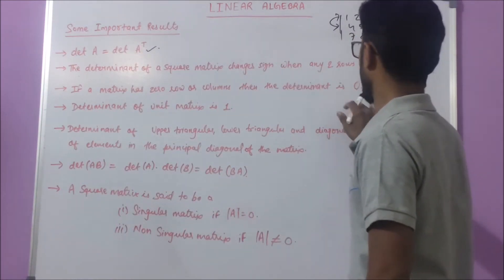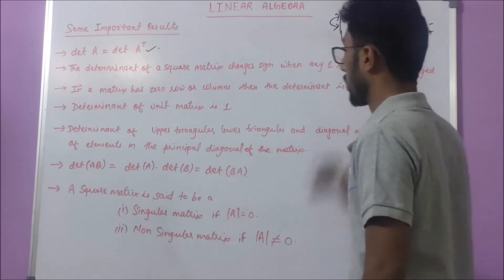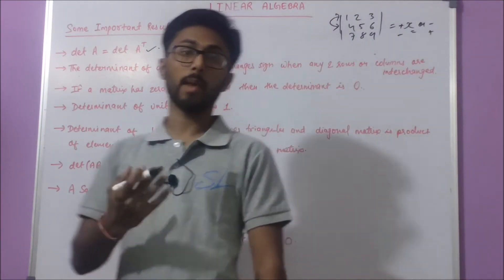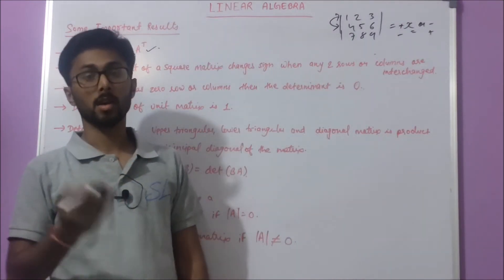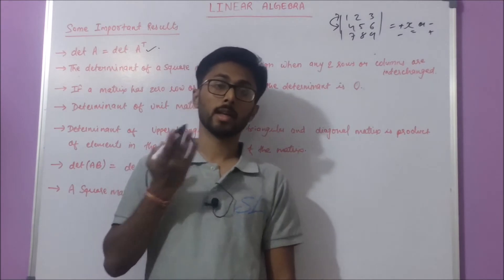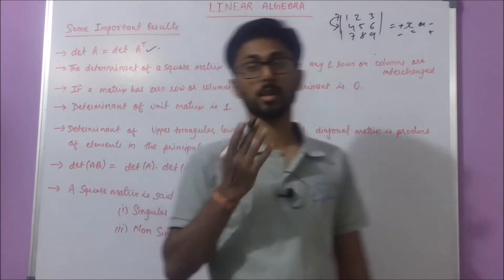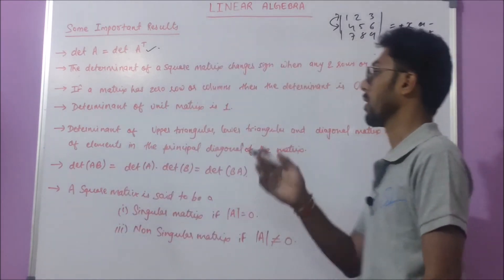The third result is: if a matrix has a zero row or a zero column, then the determinant is zero.